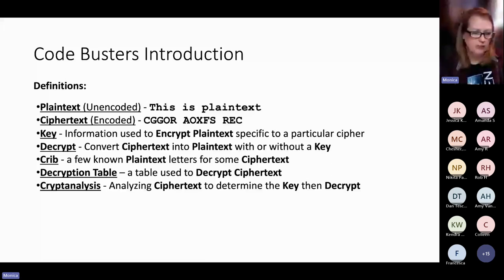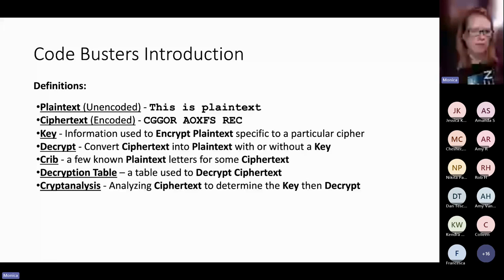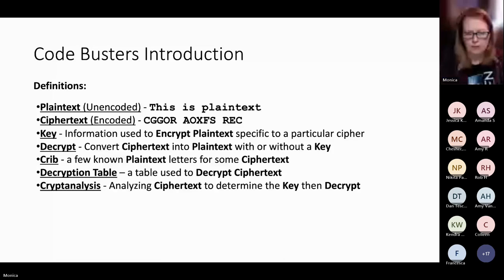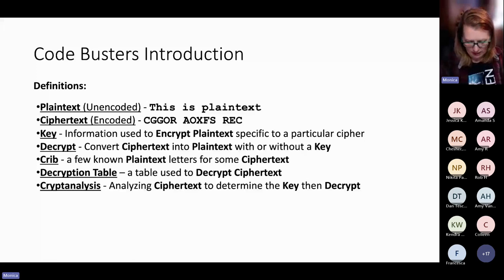One example is the Vigenère cipher — you will always be given a key to help break that code. Decryption is converting the cipher text to plain text, and this can be done with or without a key depending on the cipher — that's what the kids are doing when they decrypt ciphers. A crib is a little hint where some plain text is given to the students to help them solve the problem. A decryption table is a table used for that specific cipher to solve the problem. For instance, Vigenère has a certain table that kids will be given to help decode it. Some ciphers need a table the kids must know how to create, while others are provided.